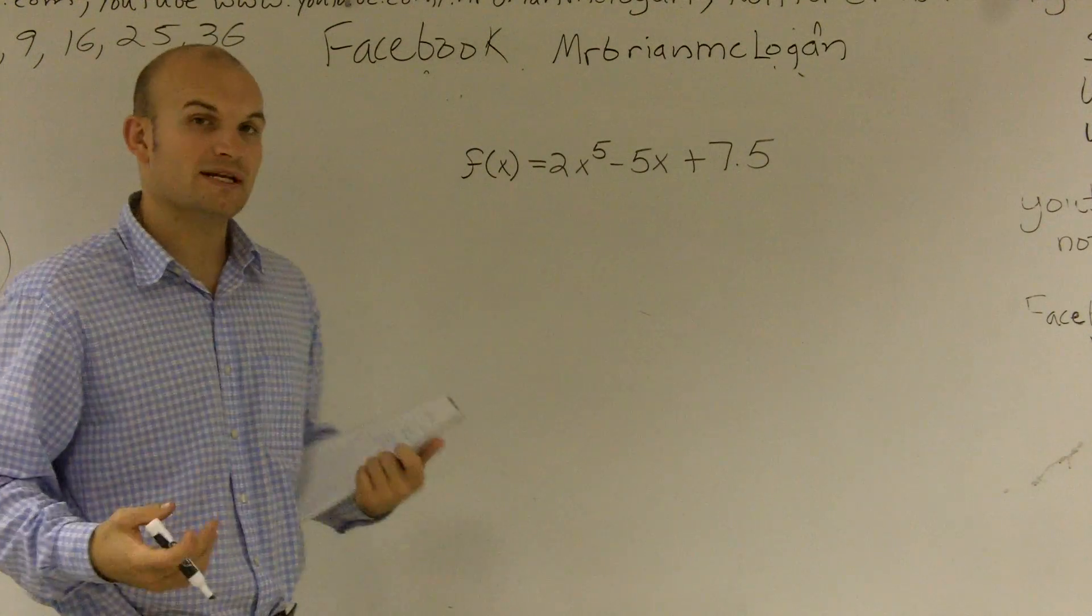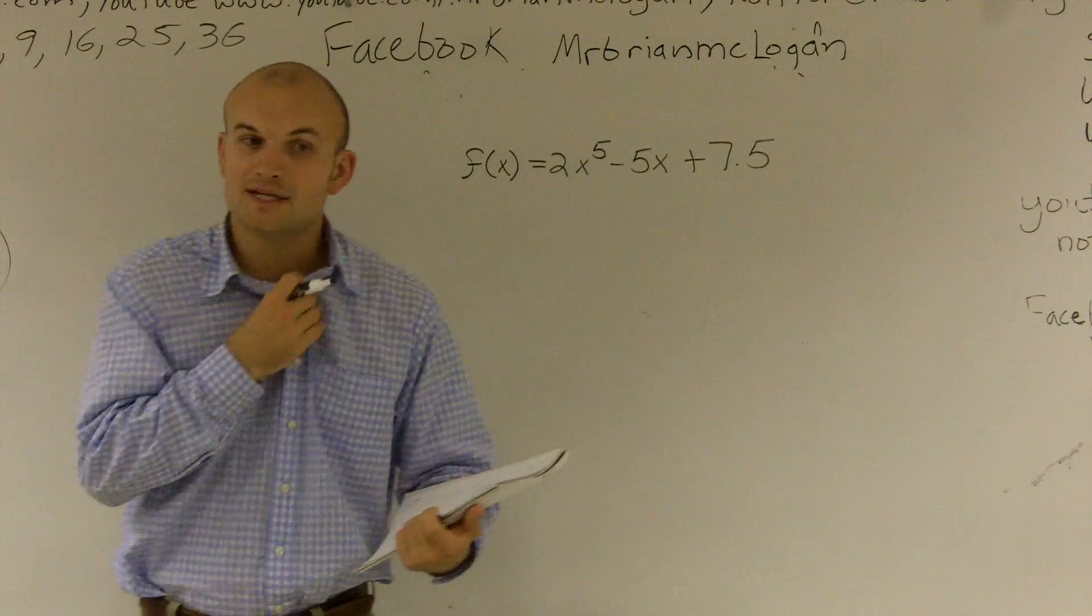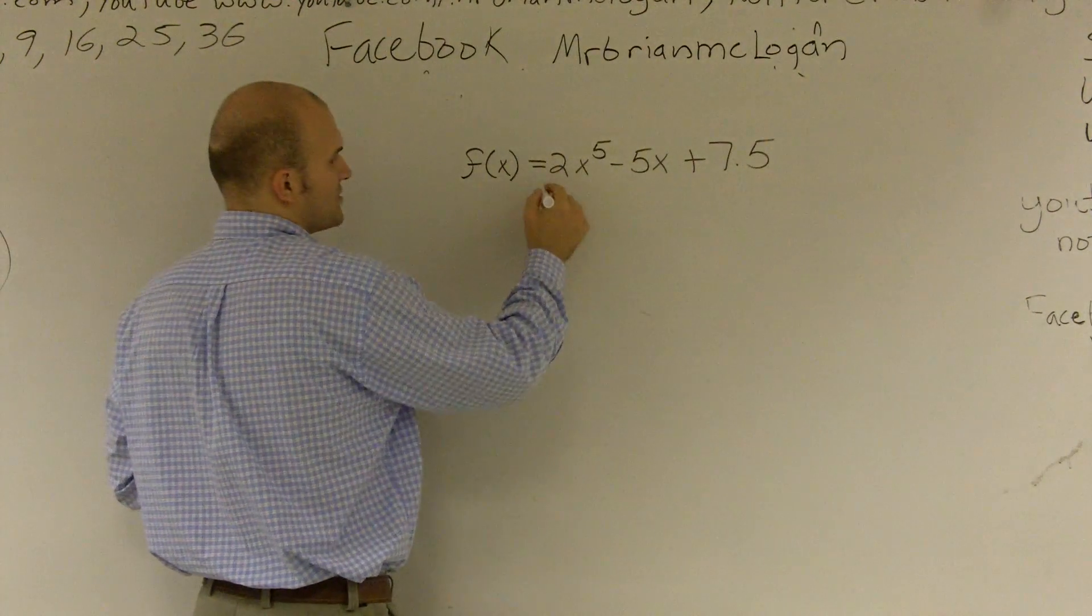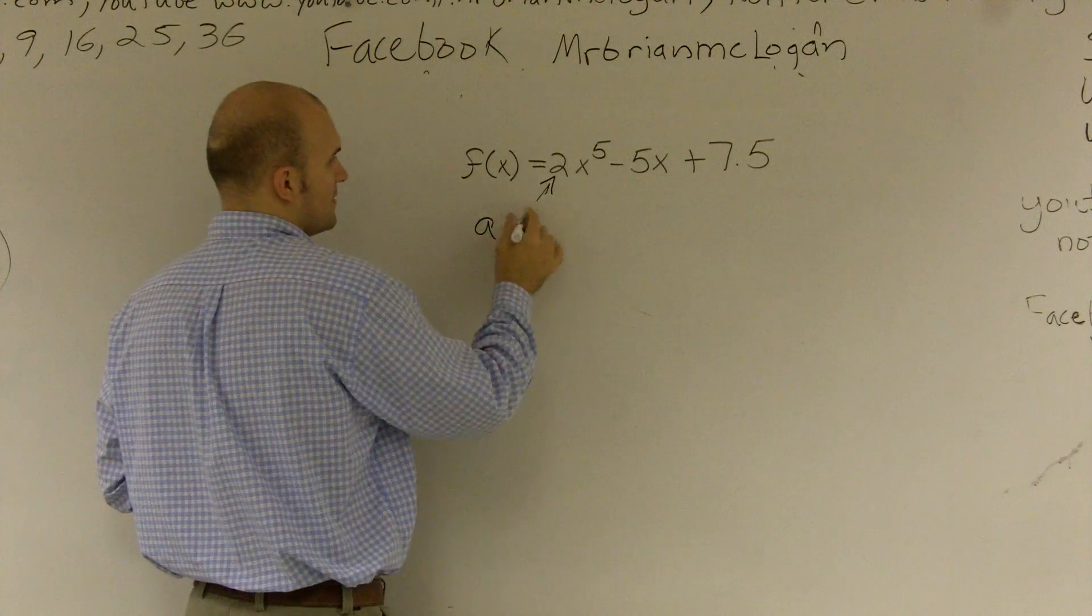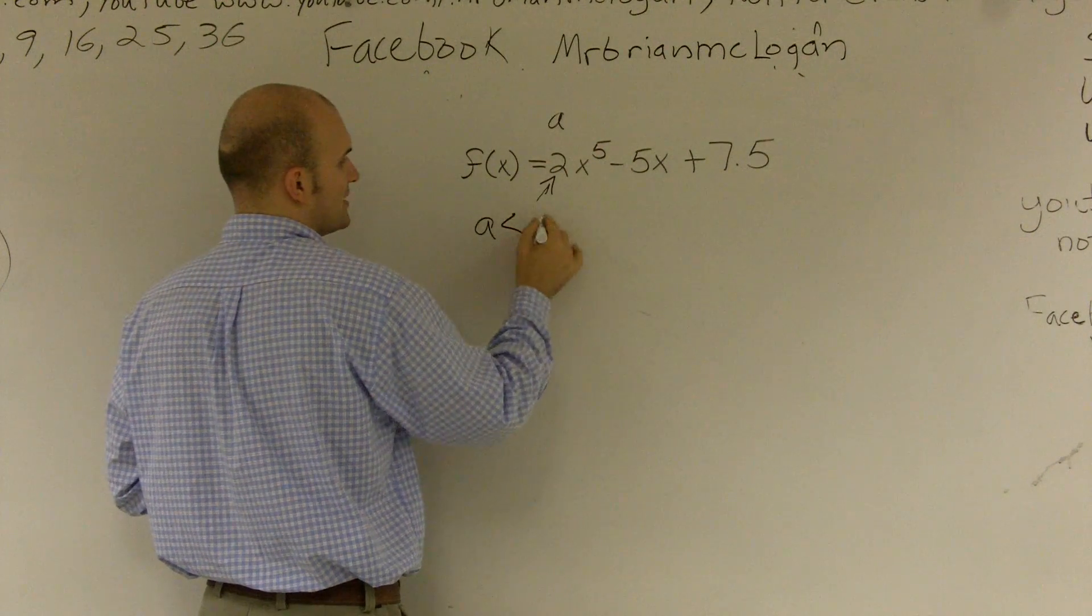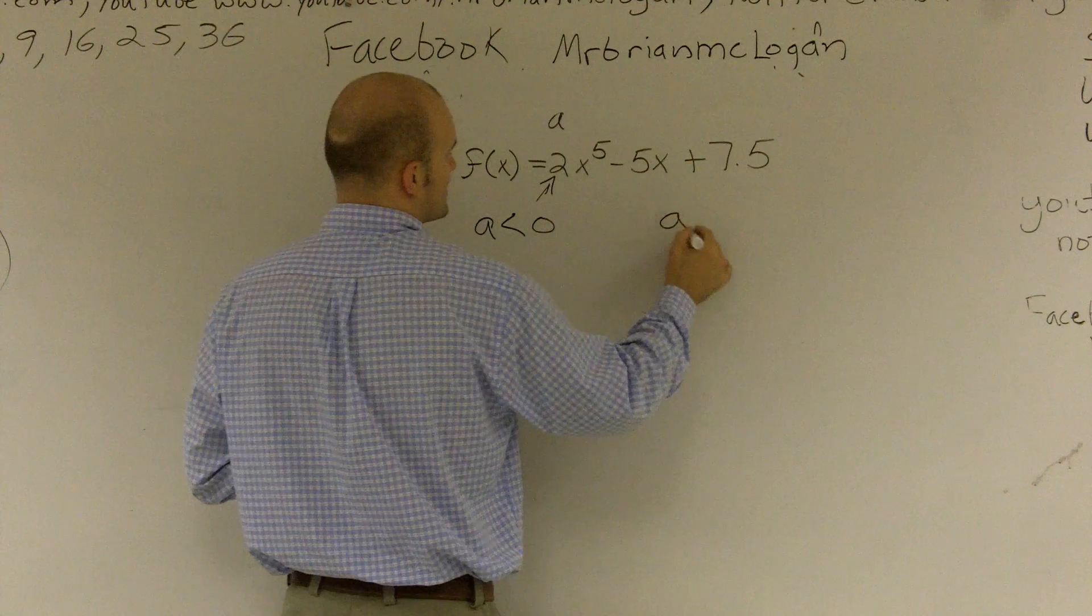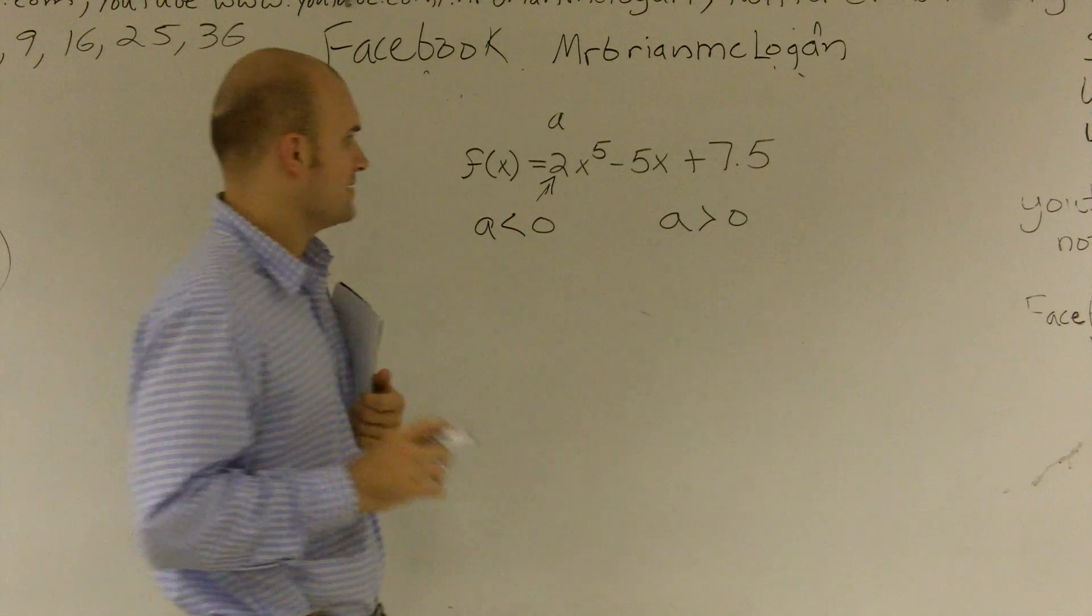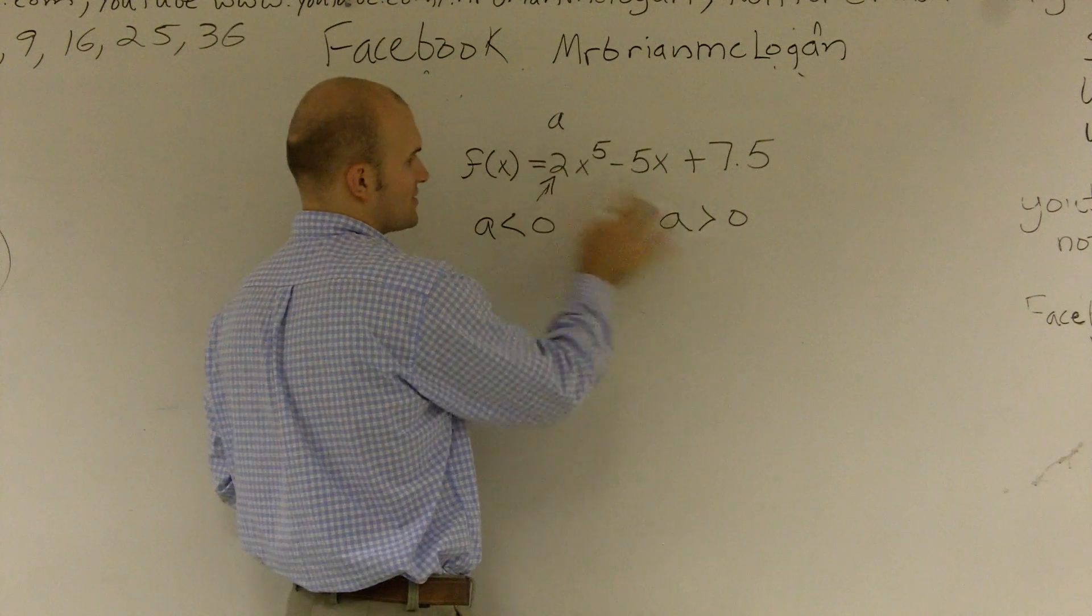The next thing we need to do is we need to find our leading coefficient. And that leading coefficient is going to be very powerful in telling us what's going to happen. So if our leading coefficient, remember, a is your coefficient. a is either going to be less than 0, or a is going to be greater than 0. Then the next thing we need to look at, and in this case, we have a is greater than 0, right?